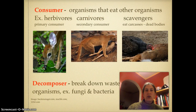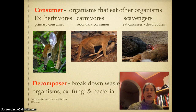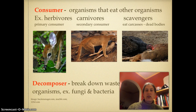Consumers are organisms that eat other organisms. Herbivores, also sometimes referred to as primary consumers, are primary because they're eating the plants. Carnivores, which are meat eaters, are sometimes referred to as secondary consumers because they are eating the primary consumers. And then scavengers eat carcasses — such as turkey vultures. A carcass just means a dead body.